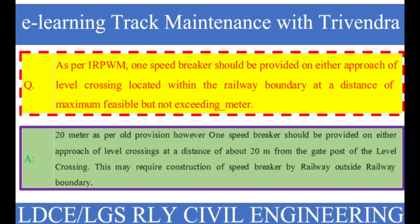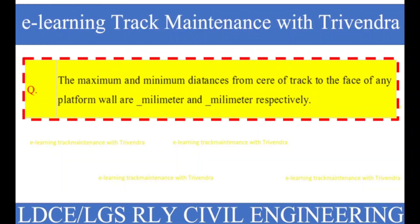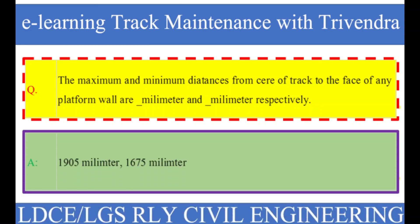Question number 67: The maximum and minimum distances from the center of track to the face of any platform wall are how many millimeters respectively? The right answer is 1905 millimeters and 1675 millimeters.